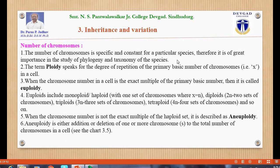Chemically, eukaryotic chromosomes are made up of DNA, histone, and non-histone proteins. The function of chromosomes is to act as carriers of heredity. The number of chromosomes is specific and constant for a particular species, and is therefore of great importance in the study of phylogeny and taxonomy.